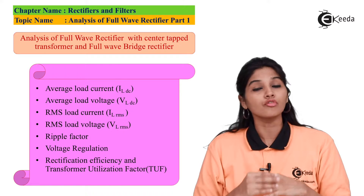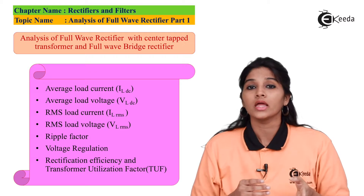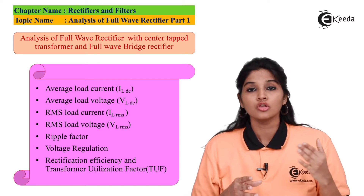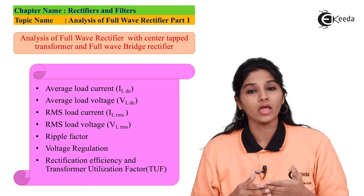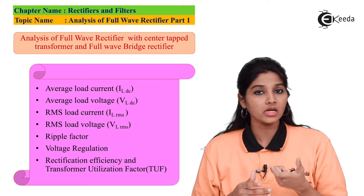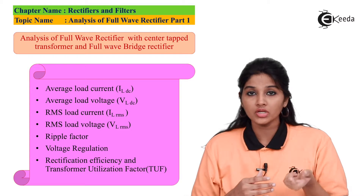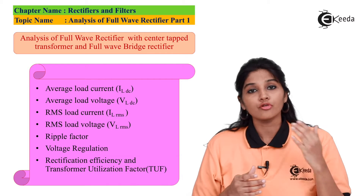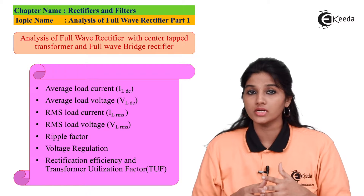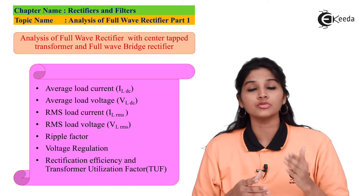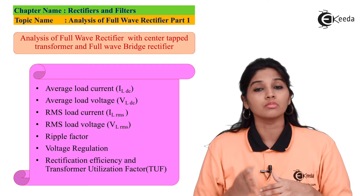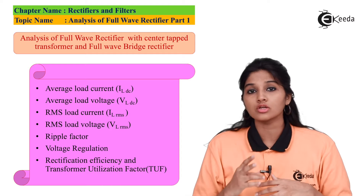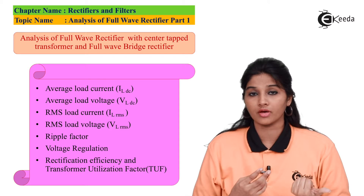The second parameter is DC or average load voltage, that is VLDC. Using Ohm's law, V = IR, so VLDC equals ILDC times RL. Since ILDC equals 2IM divided by pi, substituting this value gives VLDC equals 2VM divided by pi, which is 0.636 times VM. This value is also exactly double that of the half wave rectifier.